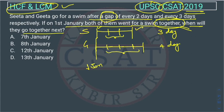When they will go together, we have to find the LCM of 3 and 4. The LCM of 3 and 4 is 12. So the 12th day.